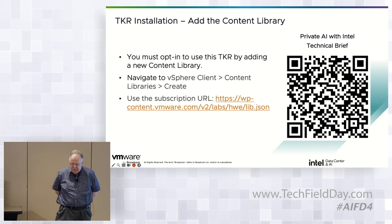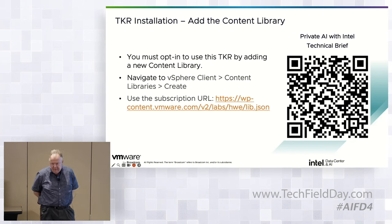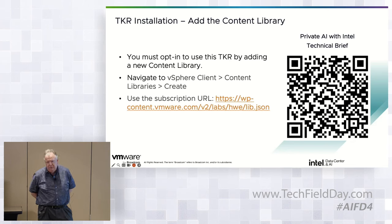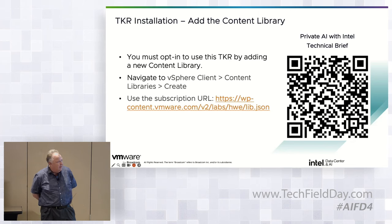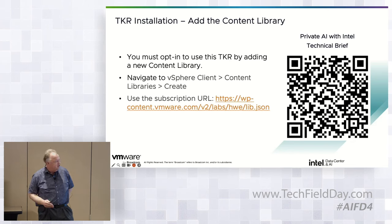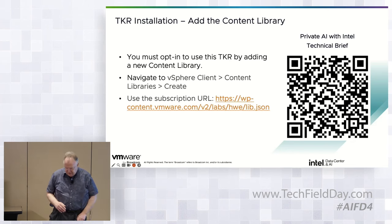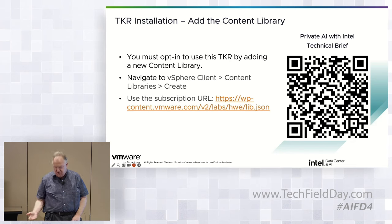Because Ubuntu 24.04 is not released yet, what the team did was release a Ubuntu 22.04 TKR using the HWE (hardware enablement) kernel. The hardware enablement kernel tracks non-LTS versions of Ubuntu — currently around kernel 6.2. So the Tanzu team released a TKR that uses the hardware enablement kernel.